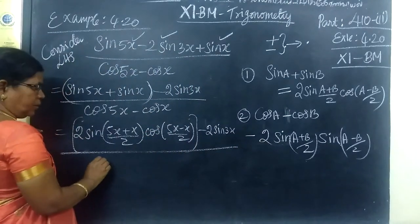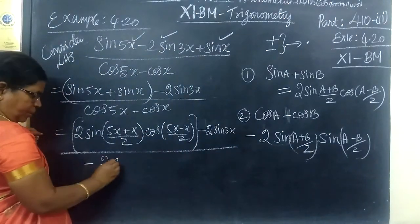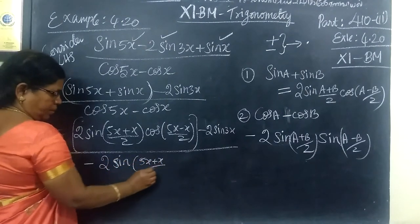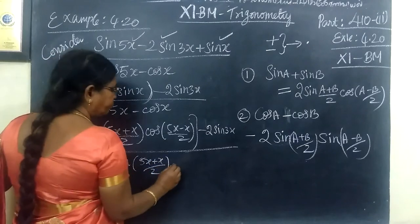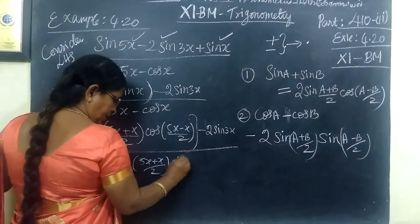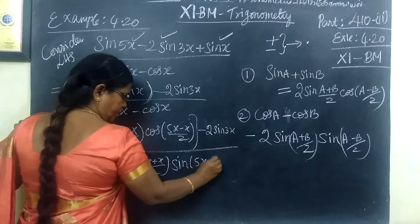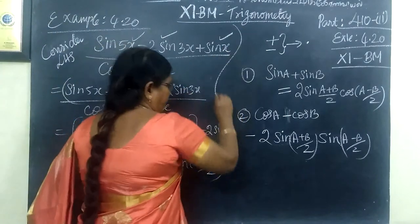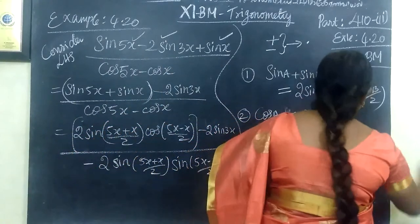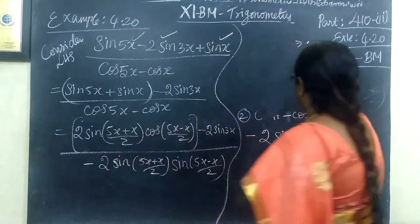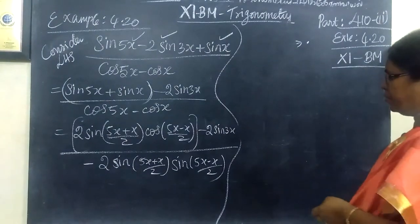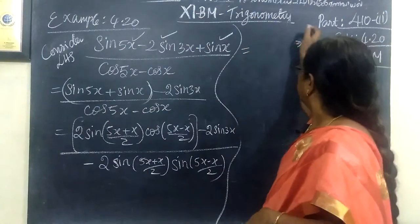In that way, what do you know? Minus. 2 sin (5x plus x by 2), then sin (5x minus x by 2). Now, if I add 6x. 6x by 2 is 3x.